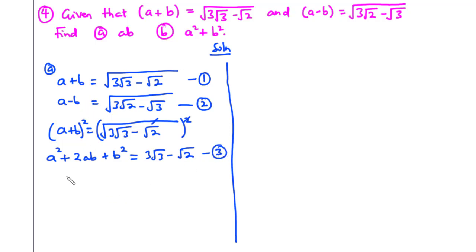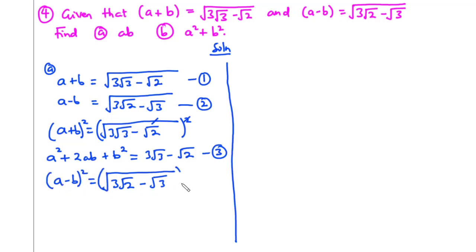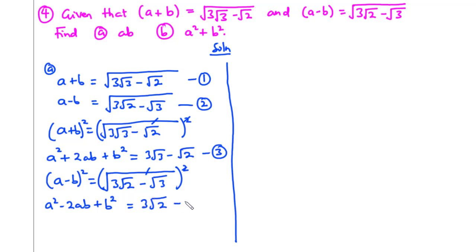For equation 2, a minus b equals the square root of 3 root 2 minus root 3. We are also going to square both sides. Here we have a squared minus 2ab plus b squared, and on the right hand side we get 3 root 2 minus root 3. Let's call this equation 4.